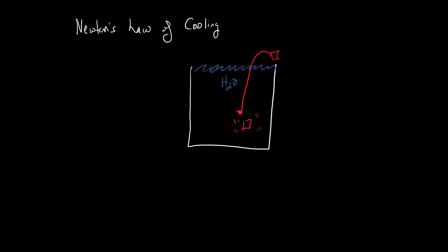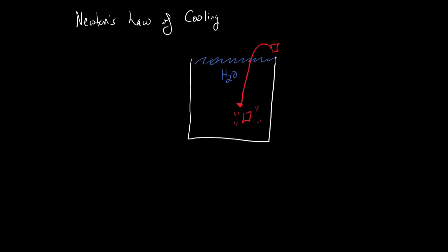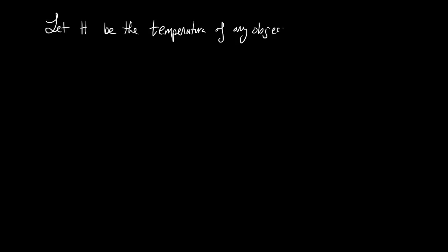We're going to use Newton's Law of Cooling when we want to figure out how long it takes for something to cool, or how much longer it will take a solution to reach a certain temperature after immersing something hot inside the solution. Let's define some variables. We're going to let H — capital H — be the temperature of any object at time T. The reason we chose H is because H is a term for enthalpy, and enthalpy is basically energy and heat. H of S is the constant surrounding temperature.